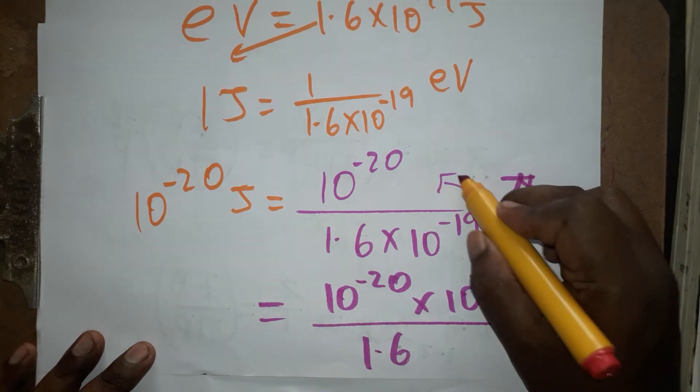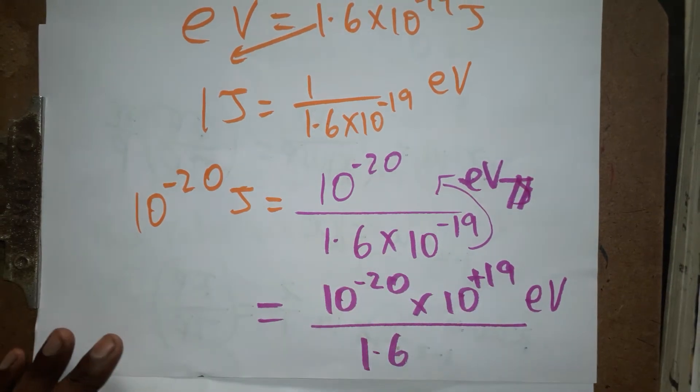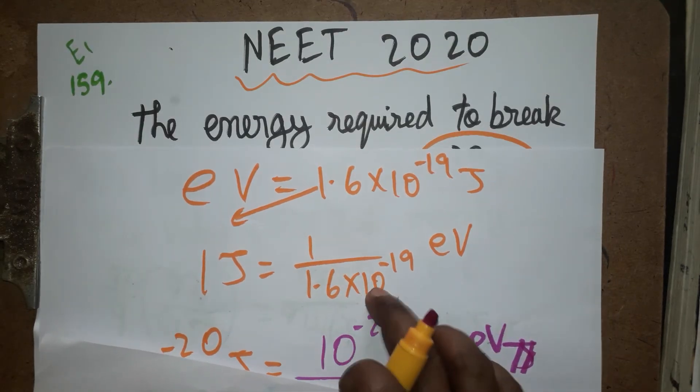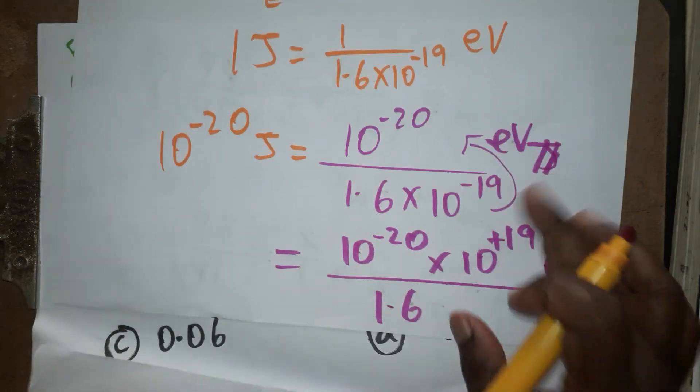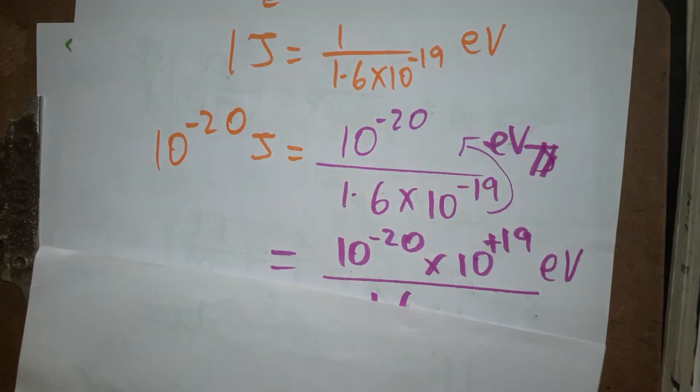Very simple logic - if you want to convert joules to eV, just divide by this value. When I bring denominator to numerator, I get 10^-1 in the numerator and 1.6 as denominator, in eV. Now I should do this calculation.